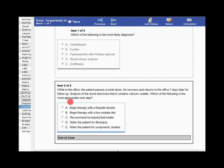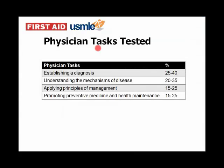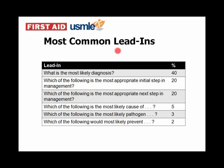Once you exit the test block, you cannot go back and change any answers, just like with the USMLE Step 1. In terms of what the board is really focused on, you need to start with the end in mind. The majority of questions will be about diagnosis and management. Mechanism of disease is also very common, and there's a chunk devoted to preventive medicine and health maintenance. The most common lead-ins ask about diagnosis, then the most appropriate initial step in management, followed by the next most appropriate step, complications, most likely complication, and related pathophysiology questions.